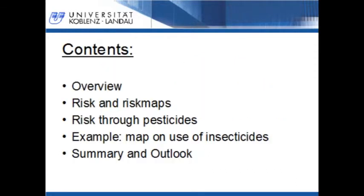First, I will give you an overview about my work within the research group Learning and Neuroscience called RECLINE. Then I will give you a definition of the term risk in the case of public health. Next, I will explain which parameters must be considered when modeling pesticide-induced risks for human health. Then I will show an example of how pesticide-induced maps can be generated with open source software. Finally, I will give an outlook about how the generated maps can be used.